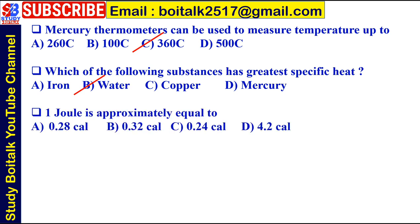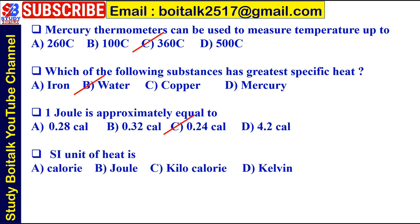Next: One joule is approximately equal to — A) 0.28 calorie, B) 0.32 calorie, C) 0.24 calorie, or D) 4.2 calorie. The answer is C) 0.24 calorie. Next: SI unit of heat — A) calorie, B) joule, C) kilocalorie, or D) Kelvin. The answer is B) joule.